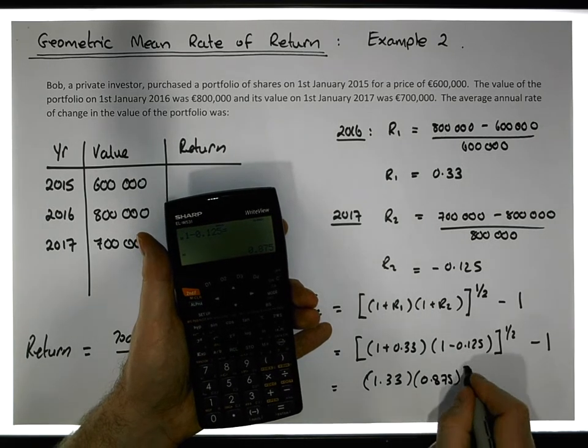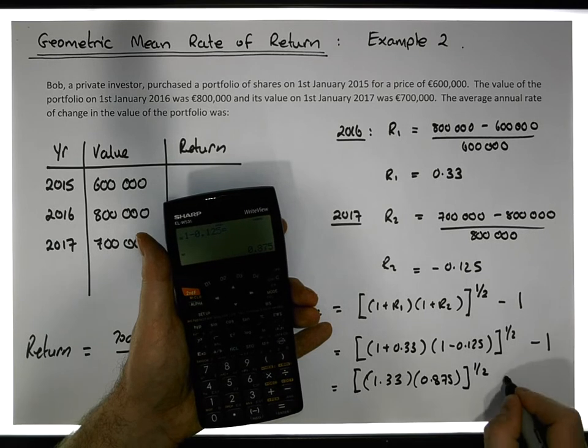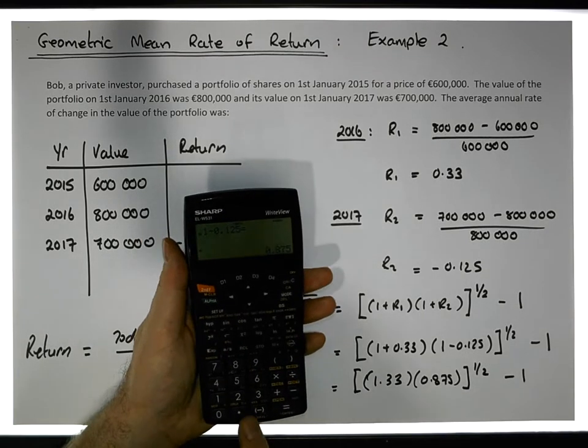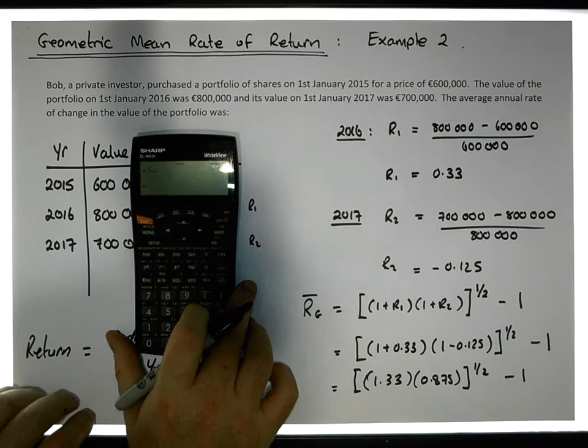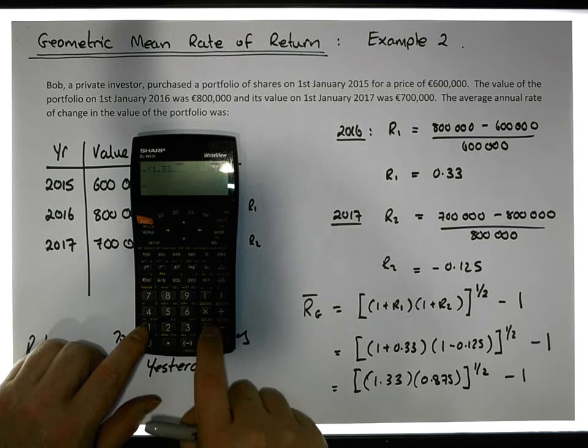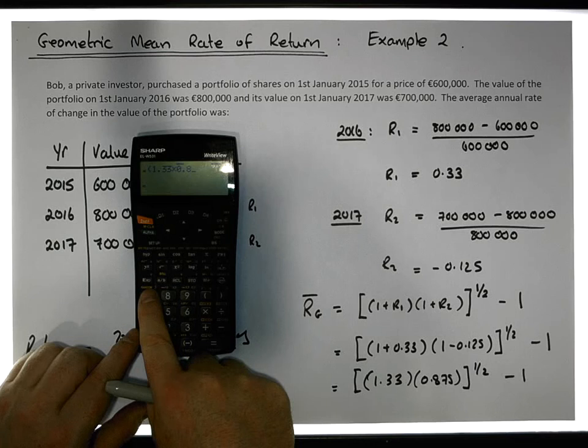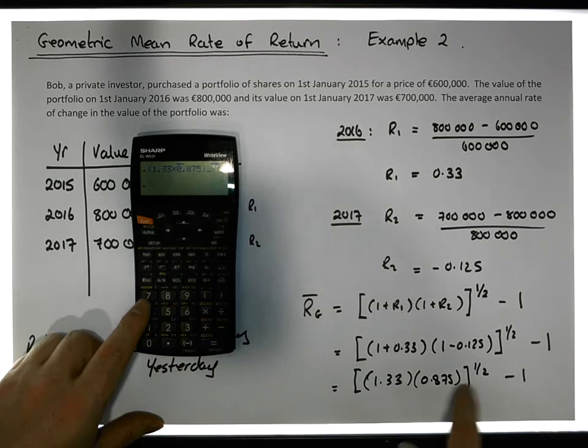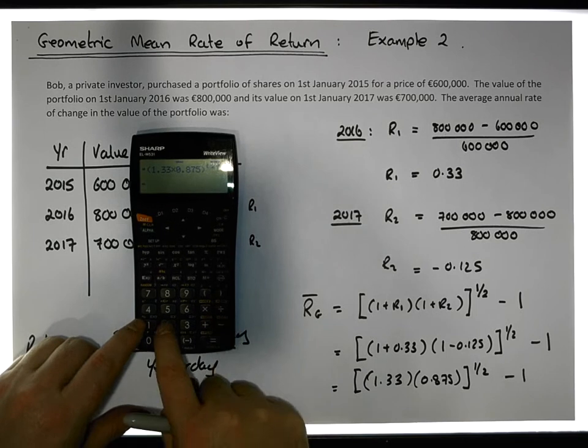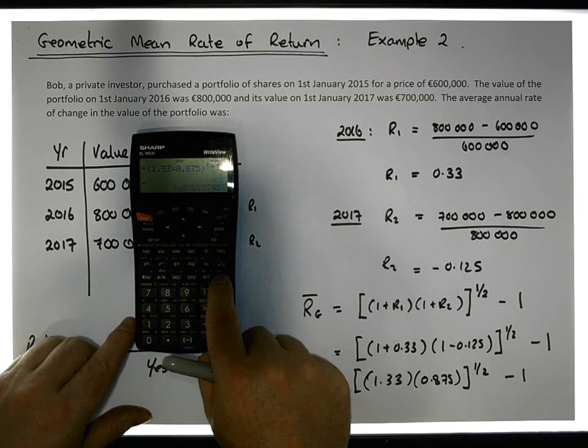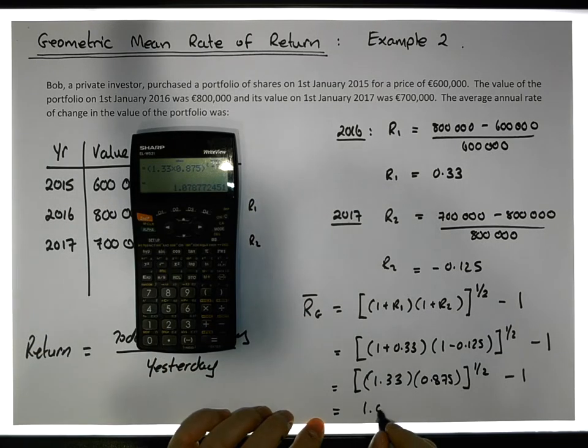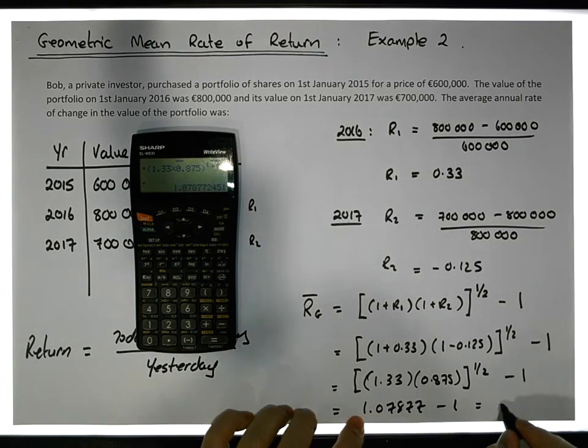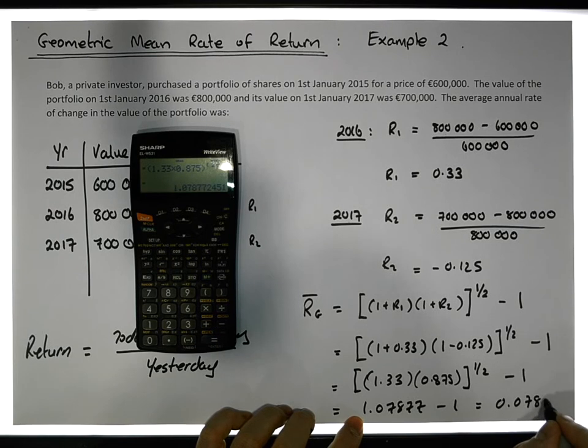We get the square root of that minus 1. So this is effectively 1.33 times 0.875, raised to the power of 1 divided by 2. That gives us a value of 1.07877 minus 1, which actually gives us 0.07877.